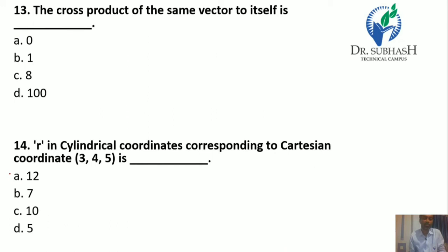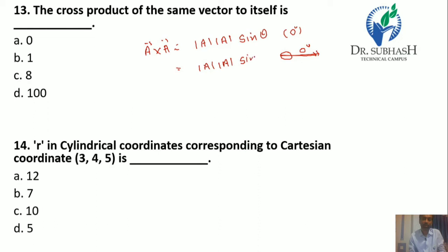Question 13: The cross product of the same vector with itself — suppose we have vector A and we multiply it by itself using the cross product. As per the mathematical formula: magnitude of A times magnitude of A times sin θ. Here θ is 0 because we are multiplying the same vector, so the angle between them is 0. Sin 0° equals 0, so the answer is 0. Answer is A.